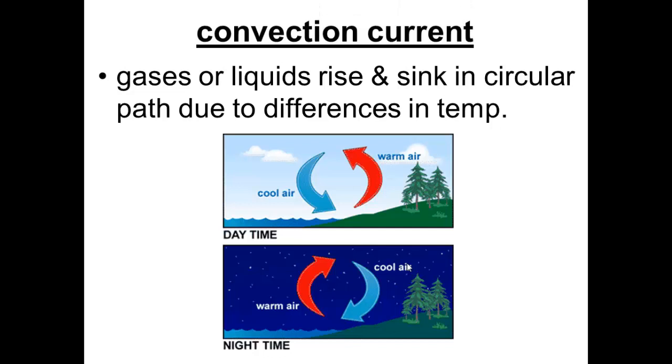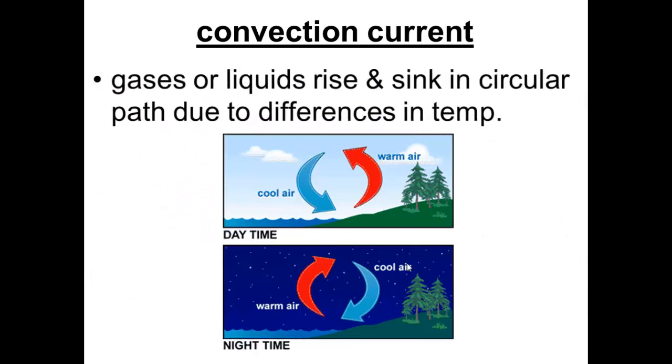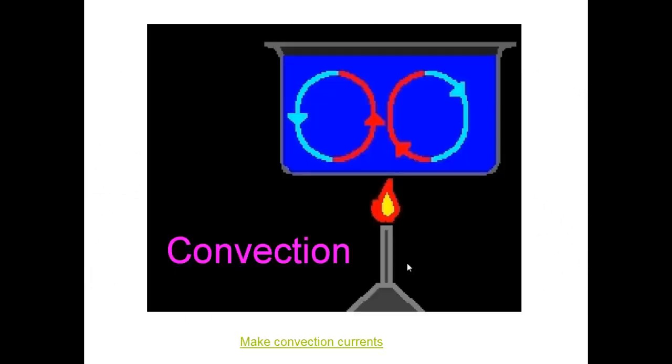Now we're going to talk about convection current. Different temperatures also cause convection currents to form. In a convection current, gases or liquids rise and sink in a circular path. As cool air moves under warm air, wind is created.